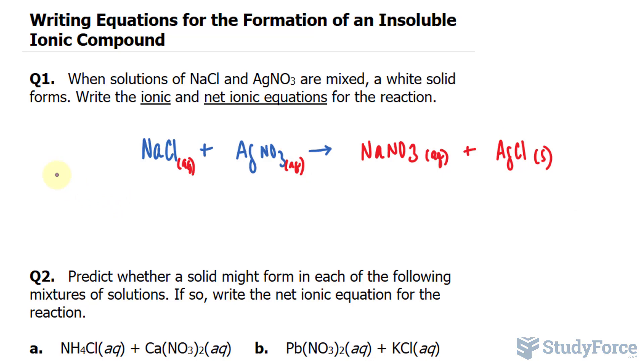To write the ionic equation—so this is the chemical equation—to write the ionic one, we will break down each of these compounds into their ions. For this molecule, we have sodium plus, and it's aqueous, chloride ions, also aqueous.